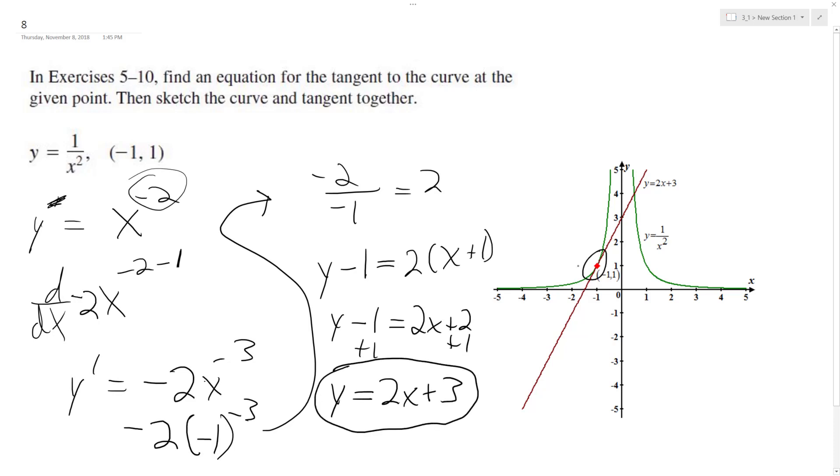Then we can draw our graph here, and this is what it looks like. The red's the tangent line and the green's the equation 1 over x squared.